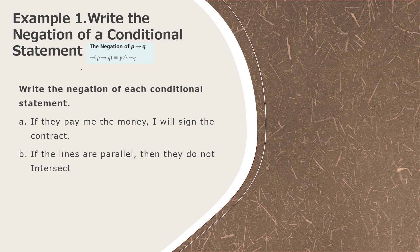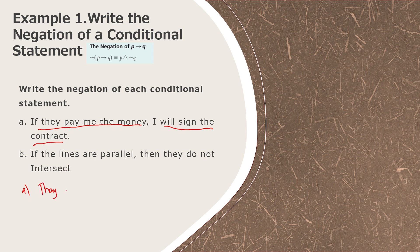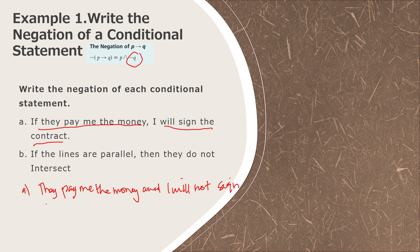Example number one: write the negation of each conditional statement. Statement: 'If they pay me the money, I will sign the contract.' Here p is 'they pay me the money,' and the negation of q is 'I will not sign the contract.' So the negation is: they pay me the money AND I will not sign the contract.